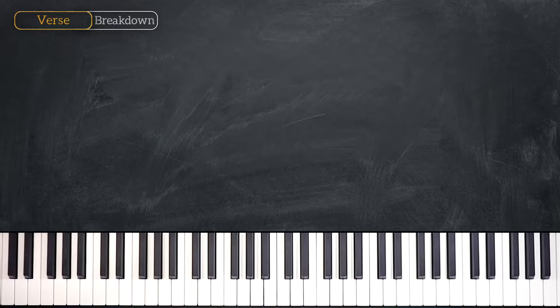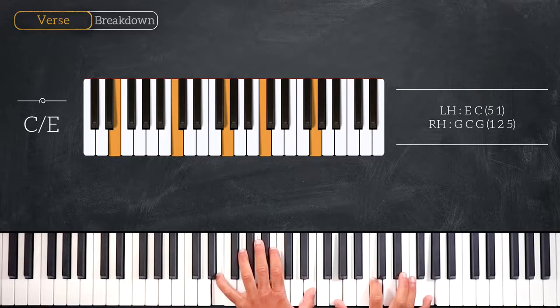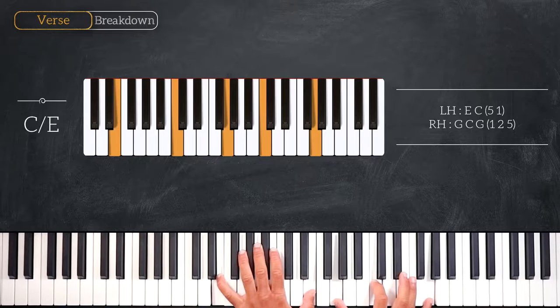Let's break down the chord progression together. The first chord we have is C over E. Playing octave E on the left and G, C, G on the right.